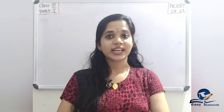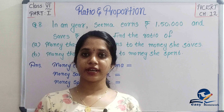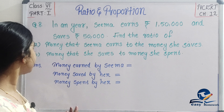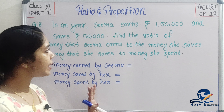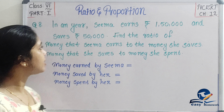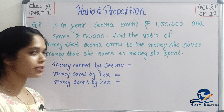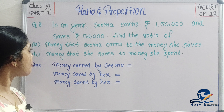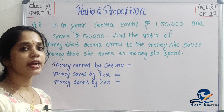Let's start the class. We are going to talk about question number 8. Question number 8 is: In a year, Sema earns Rs. 1,50,000 and she saves Rs. 50,000. Find the ratio of money that Sema earns to the money she saves.